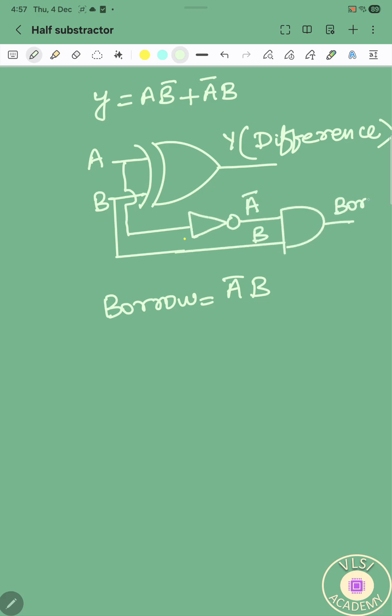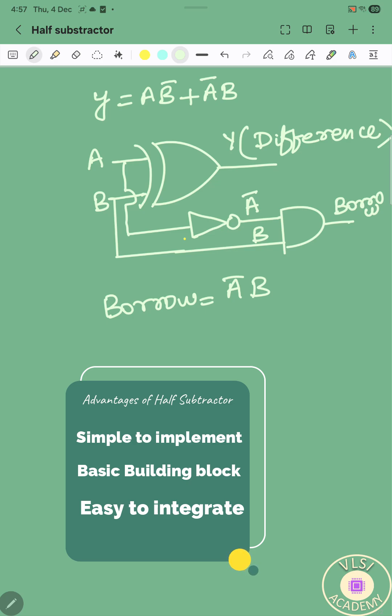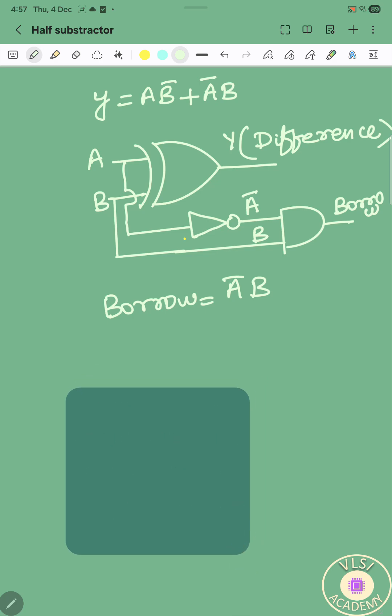Half-subtractor plays a very important role in terms of digital electronics in VLSI world. The advantages of half-subtractor is that it is very simple and it is nowadays used as building blocks for high complex circuits and it is very easy to integrate with.